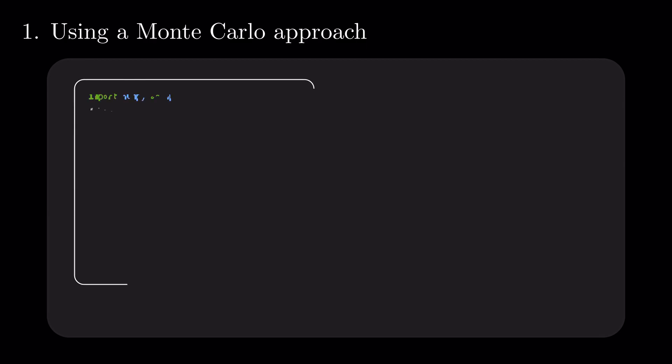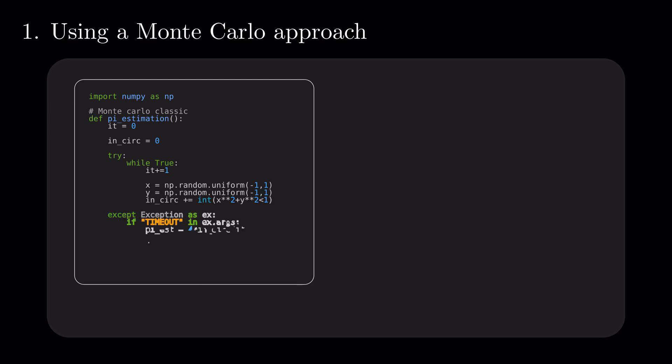We have the probability needed to run a Monte Carlo estimate. So we generate pairs of coordinates between minus 1 and 1 until the time is up, then compute the ratio of points inside the circle, multiply it by 4, and voila! We have an estimate for pi.